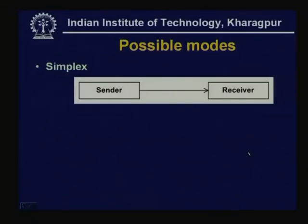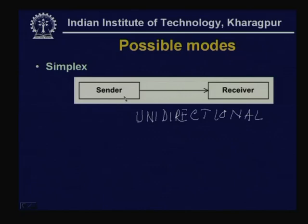Let us see the various modes. The first one is simplex mode, where data is unidirectional — data goes from sender to receiver and there is no data going from receiver to sender. For example, a computer sending to a printer is a case where we can use simplex mode of communication.